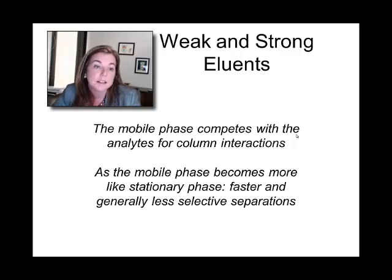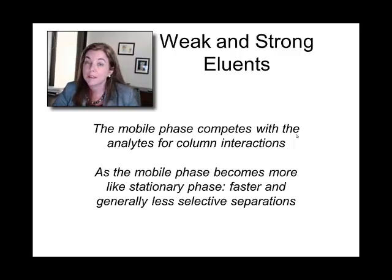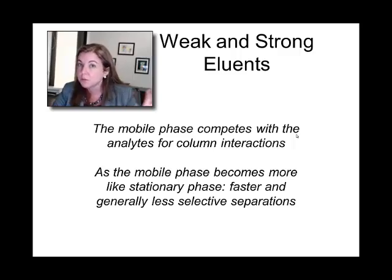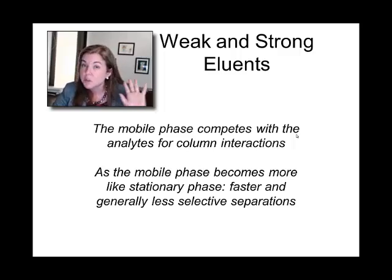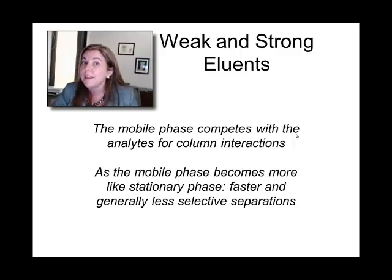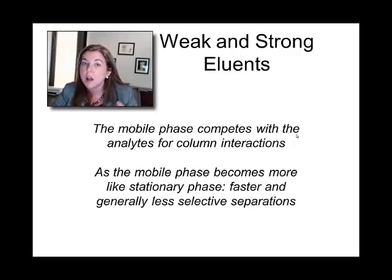We learned in the last lecture about strong and weak eluents — strong being highly interacting, weak being not so interacting. The mobile phase competes with the analyte for column interactions. As the mobile phase becomes more like the stationary phase, you're going to have a harder time for that analyte to compete and actually see the column — it's just going to zoom right on by. Whereas if the mobile phase is weak and has no interaction with the column, the analytes will really spend some time interacting and come out much more slowly.